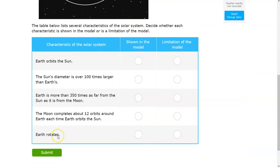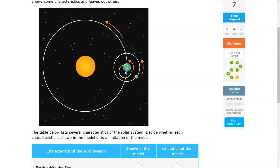And the last one is, Earth rotates. Does it show in the model whether or not Earth is spinning?